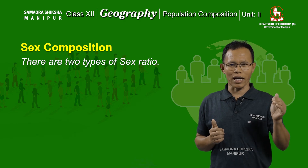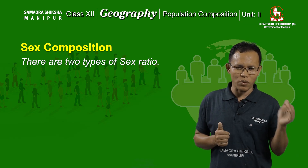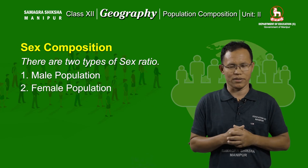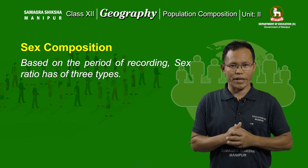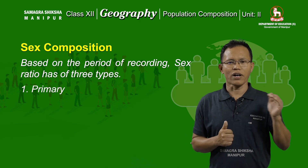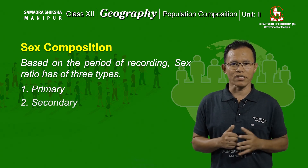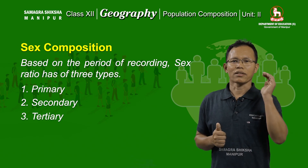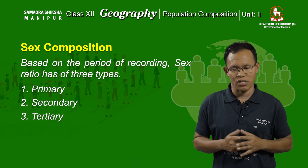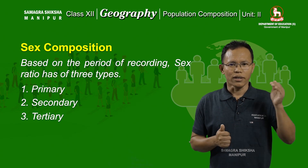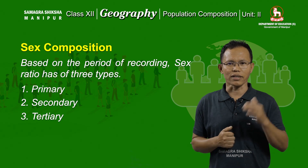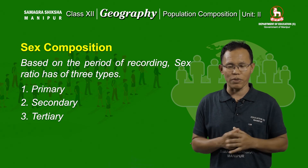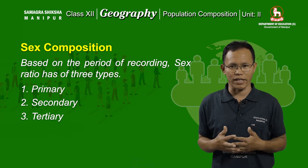Accordingly, there are two types of sex ratios. The first indicates male population, and the other indicates female population. Based on the period of recording, sex ratio has three types: primary sex ratio, secondary sex ratio, and tertiary sex ratio. Primary sex ratio indicates the number of male or female population at the time of conception. Secondary sex ratio indicates the number at the time of birth. Tertiary sex ratio indicates the number at the time of enumeration.